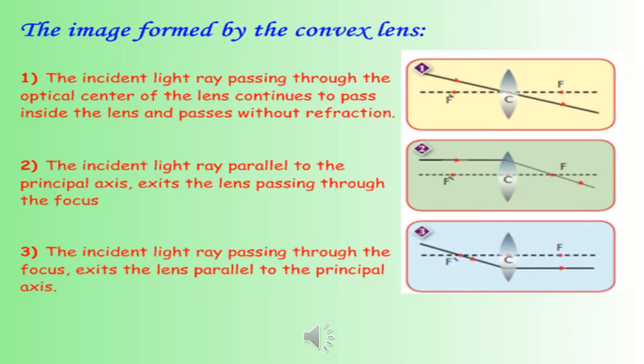The image formed by the convex lens. The incident light ray passing through the optical center passes without refraction. The incident light ray parallel to the principal axis refracts passing through the focus. The incident light ray passing through the focus refracts parallel to the principal axis.